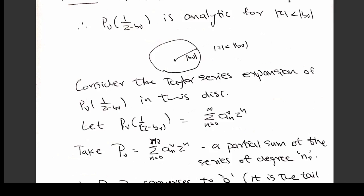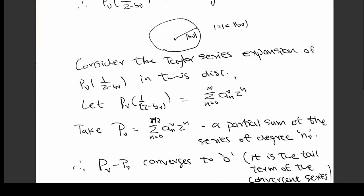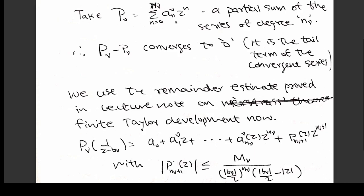First of all we assume that all b_ν's are non-zero, and we consider this case first. Then you take a disk of radius |b_ν|. Since it is an isolated pole, we know that this polynomial in 1/(z − b_ν) will be analytic inside this disk, because the only point where it loses its analyticity is b_ν itself, which lies on the circle, not inside. So inside this disk, this will be analytic. Now you look at the finite Taylor development — this is what we take to be the small p_ν.